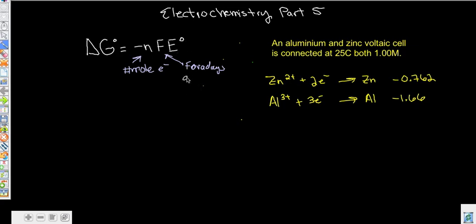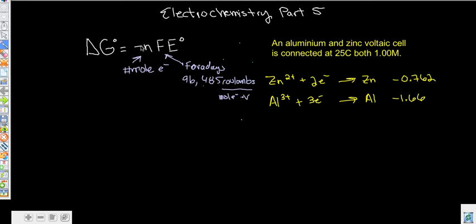Faraday's constant relates the number of moles of electrons to the voltage at standard conditions. Faraday's constant is 96,485 coulombs — a coulomb is a measure of electrical charge. So that is a lot, but this is how many coulombs of electrical charge you get per mole of electrons. You have to know moles of electrons and you have to know voltage. Our voltage under standard conditions is what this is right here.